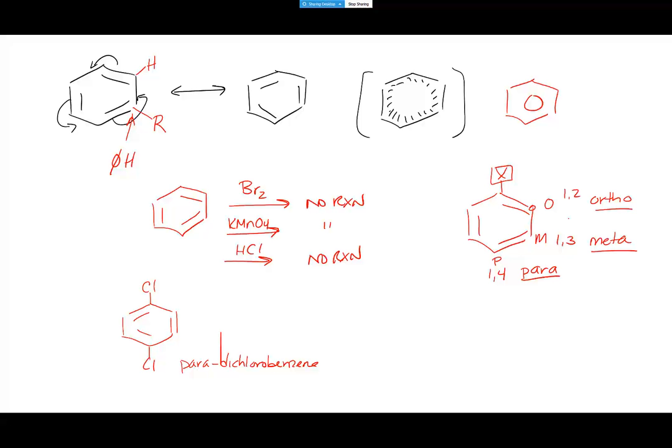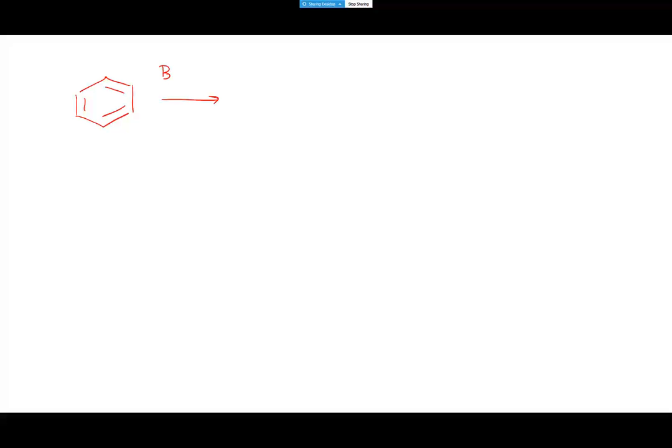Let's talk about one really harsh reaction of benzene: Birch reduction. In Birch reduction, you actually destroy the aromaticity of the ring. If the ring is super stable, then destroying its aromaticity is going to require a really harsh reagent. Since this is a reduction, it means gaining electrons.